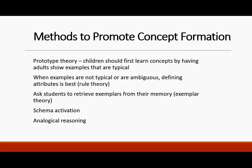Ask students to retrieve exemplars from their memory — that is the exemplar theory. What's an example of a mammal? What's an example of a southern state? We can also activate a schema. How does a wedding occur? Well, people show up, they do things in order, there are people walking down the aisle, bride's side, groom's side. We have a schema, and when that schema is activated, we try to fit things into it — assimilate or accommodate.